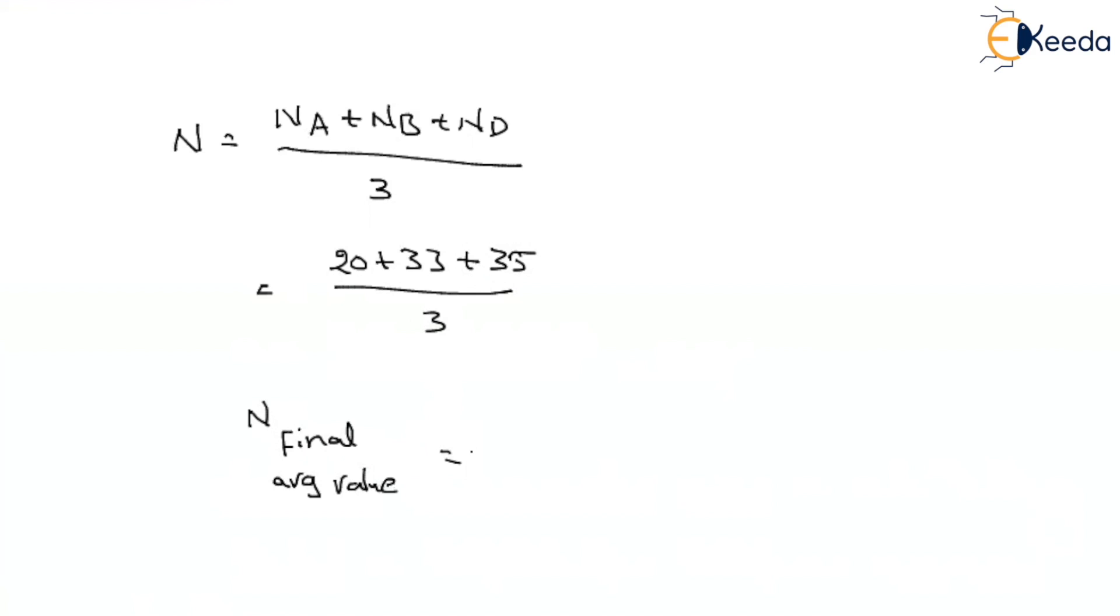So how much you are getting? 20 plus 33 plus 35 divided by 3. You are getting it as 29.33. Let us consider your final value as 29 on an average.